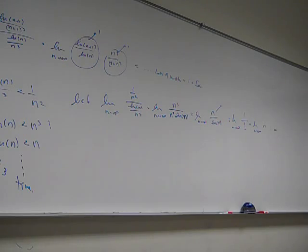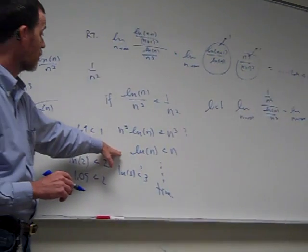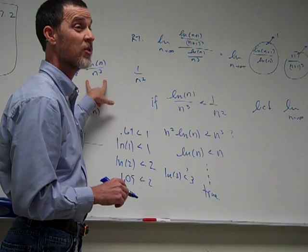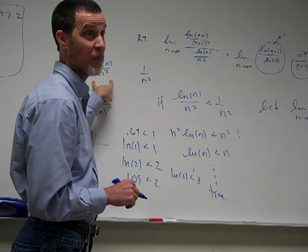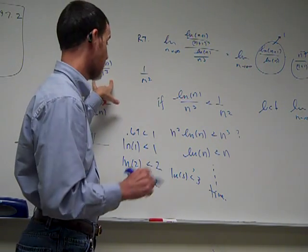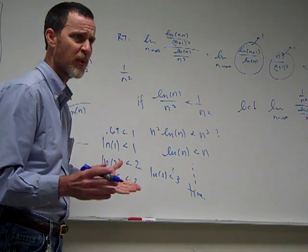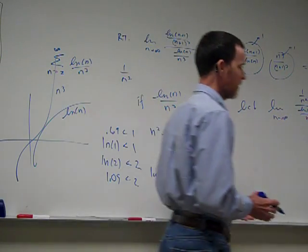Well, you're stuck with this. You're stuck with the direct comparison test with 1 over n squared. That's a tough one because it's not an easy one to see what to compare it to. I agree, that's just a tough one. But you can't make me put all the ones in the back easy. I've got one more for you.